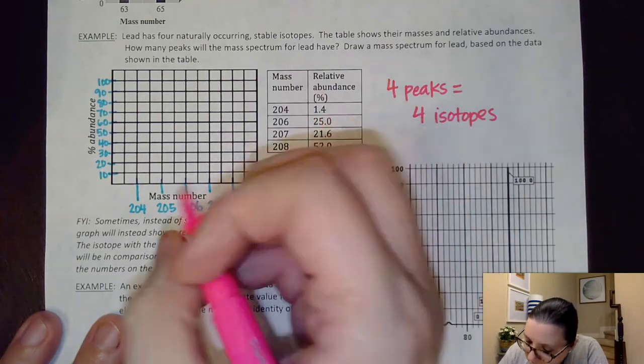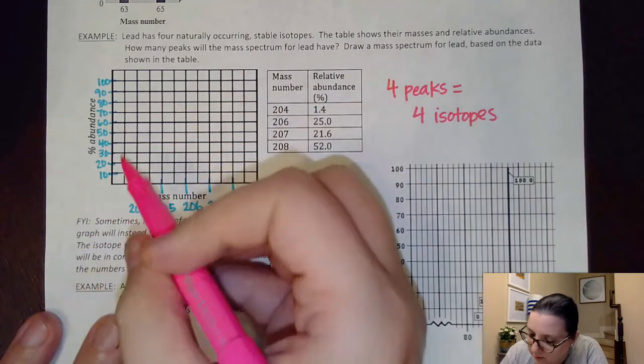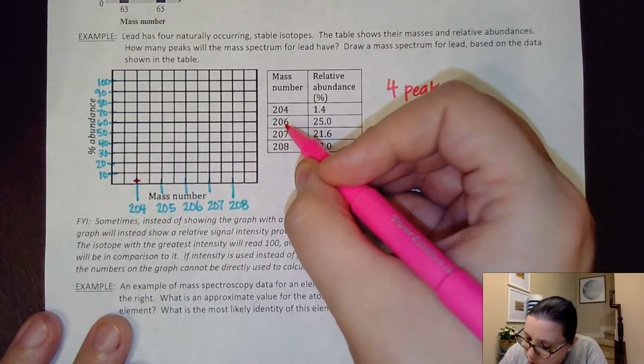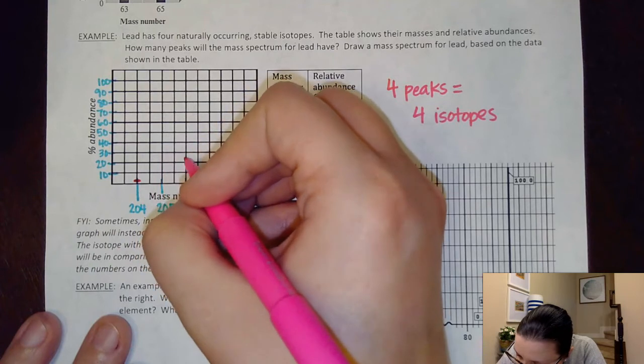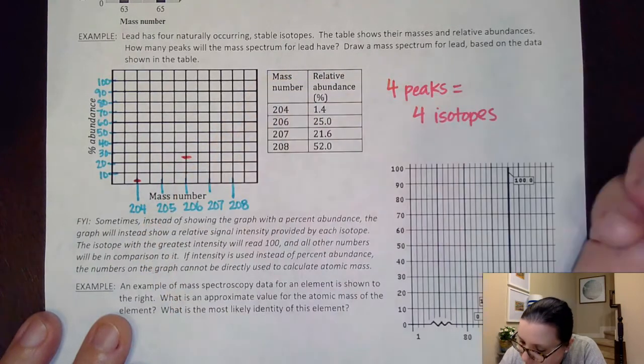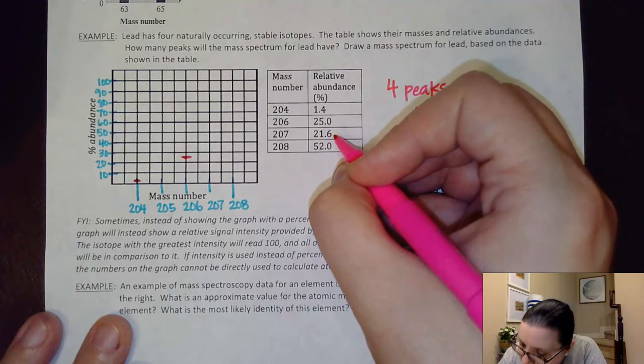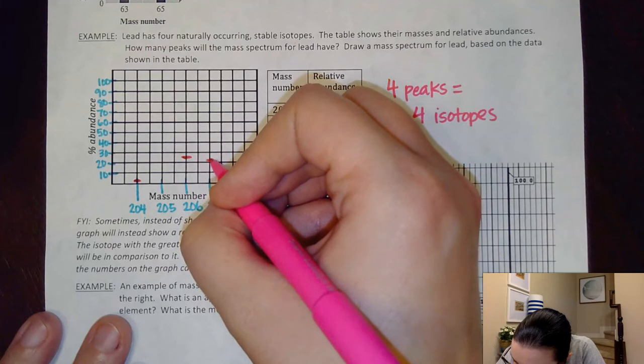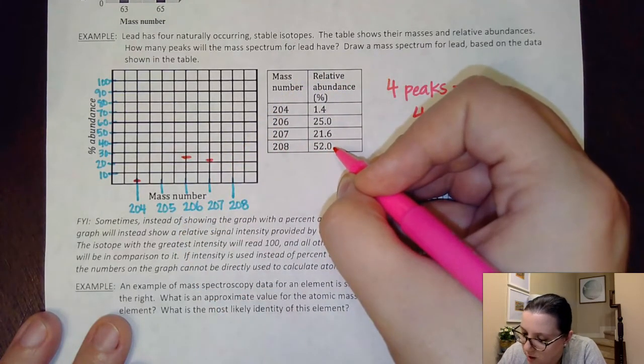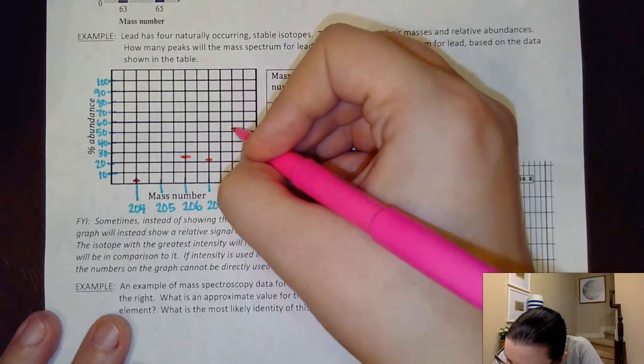So for 204, I had 1.4. So that's going to be a really low peak here. I'm going to place this out here. 206, I have 25. So that's going to be kind of right there. For 207, I had 21.6. So it's going to be a little bit less than that one, okay? And then, for 208, I had 52. It's a little bit higher than 52.